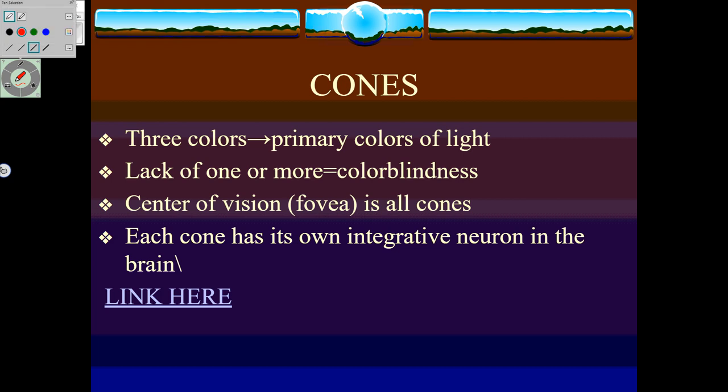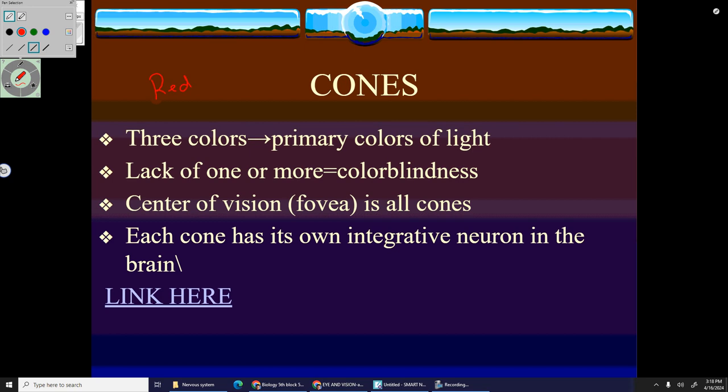The primary colors of light are red, green, and blue. Before you freak out about that, if you've been in the theater and look at the lighting, they have red lights, green lights, and blue lights.